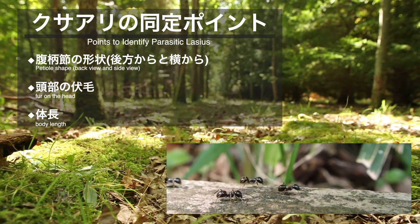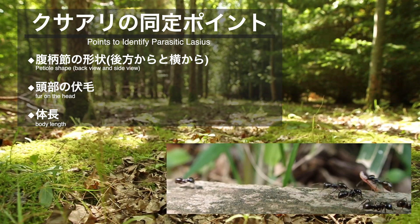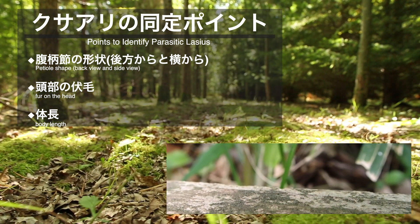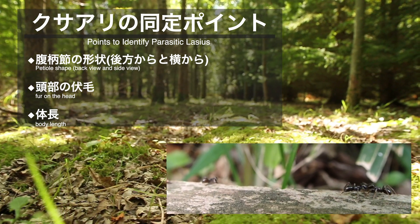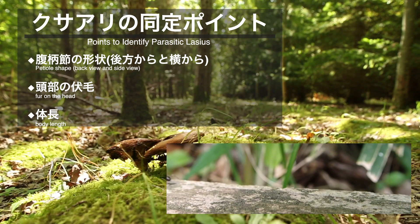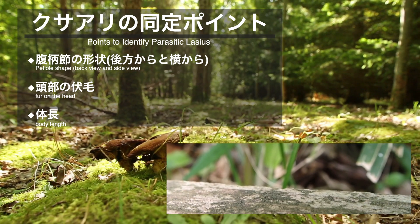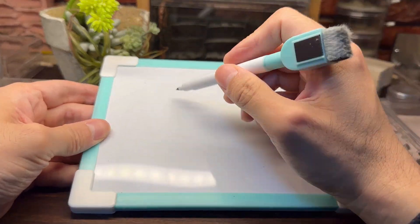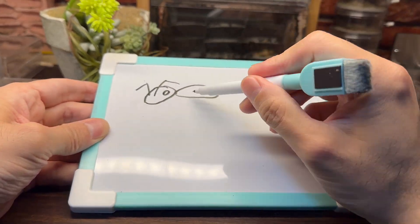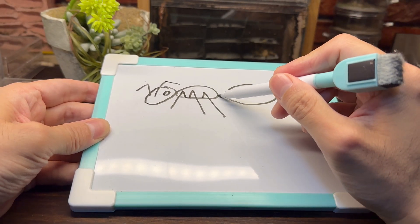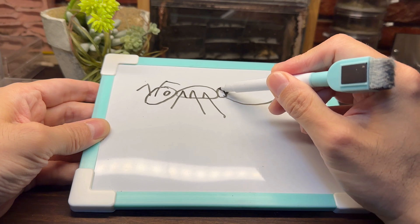見分けるのが難しい草アリの仲間ですが、実際には体の部位を細かく見ることで判別を行うことができます。主な同定ポイントは以下のようなものとなります。一つ目に腹柄節の形状（後方から見た場合と横から見た場合）、二つ目に頭部の伏毛、三つ目に体のサイズ・体長です。まず腹柄節を見ていきましょう。腹柄節とは胸部と腹部の間にある小さな部位で、この部分ですね。